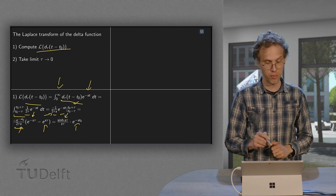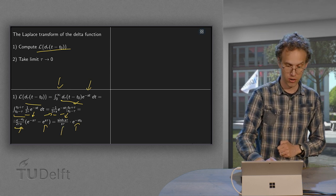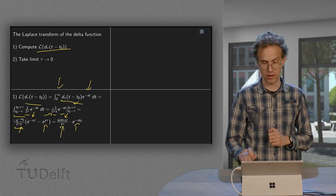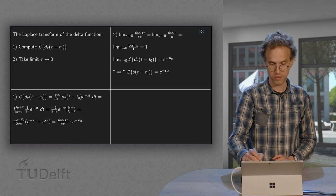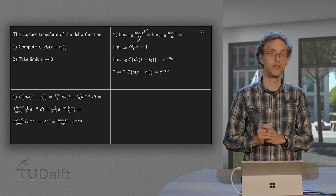Second step. What happens if we take τ to zero? Now, the τ is only there. So let's see whether we can take τ to zero. We have, of course, then zero divided by zero. So what do we do?